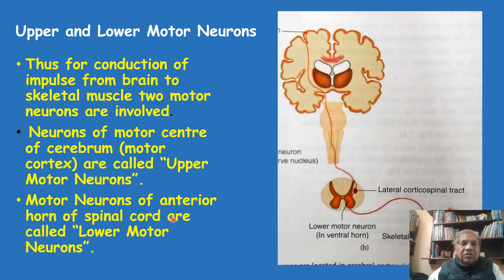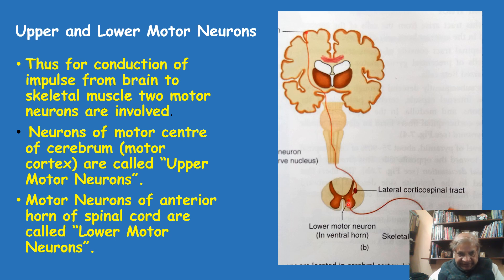The neurons of the motor center of the cerebrum — that is, the motor cortex — are called the upper motor neurons. The neurons in the anterior horn cells of the spinal cord are called the lower motor neurons. So upper is located in the cerebrum, and lower is located in the spinal cord.